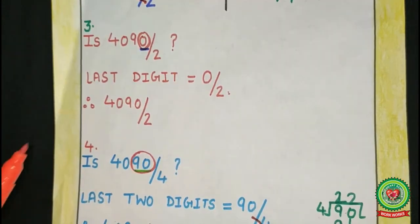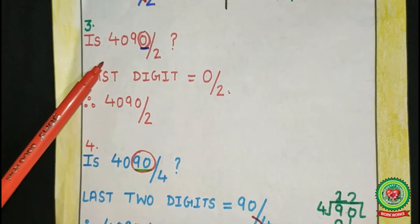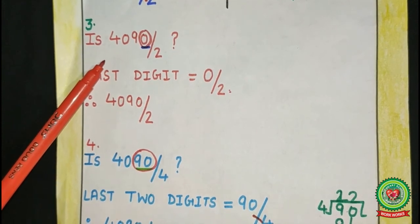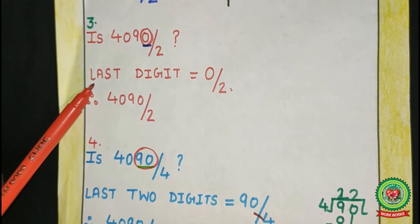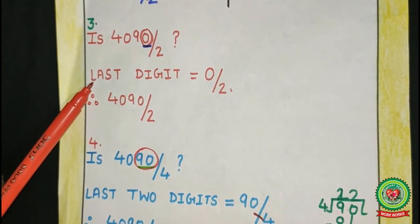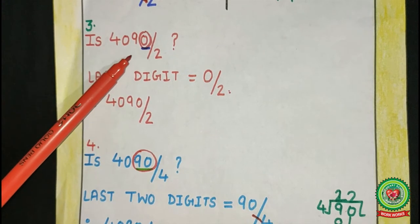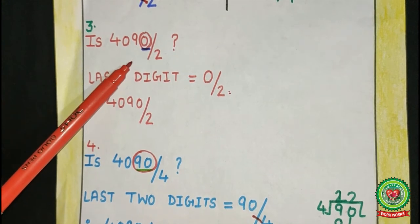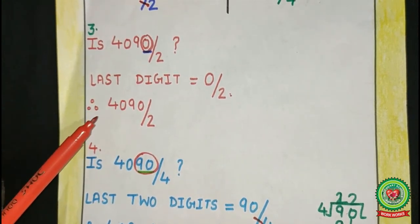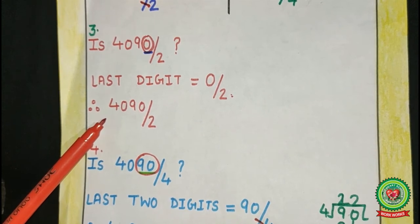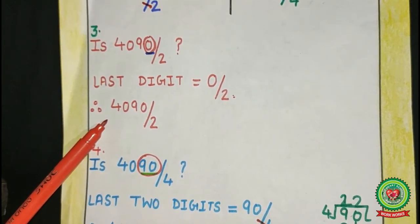Example 3: Is 4,090 divisible by 2? First we have to find the last digit. The last digit is 0, and 0 is divisible by 2. Therefore, the number 4,090 is divisible by 2.